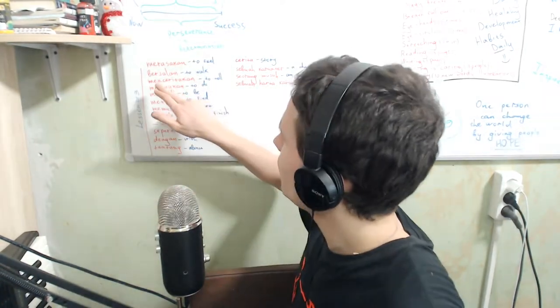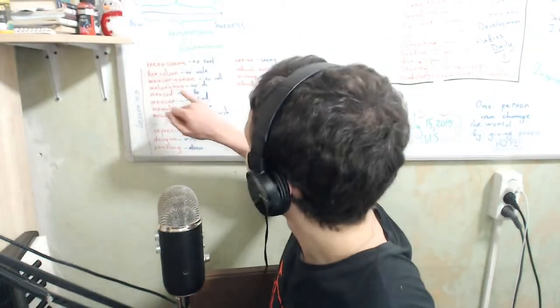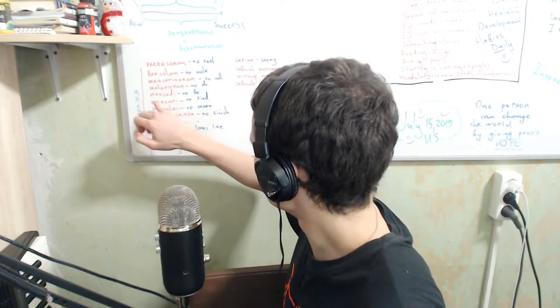Next is berjalan, berjalan — 'to walk' — because our character can be walking. Then menceritakan — 'to tell' — when we tell a story we use this verb. Our character tells something to another person. It's like 'to say,' which is berbicara. Next is melakukan, melakukan — 'to do' — when we use a tool and do something.